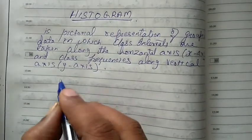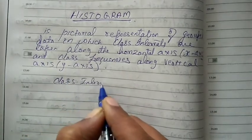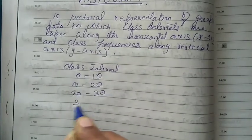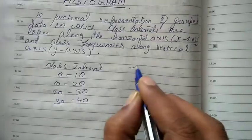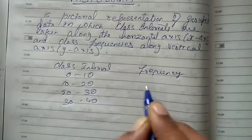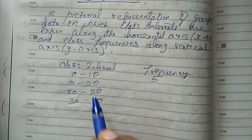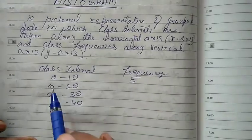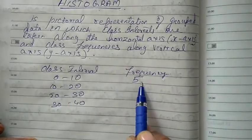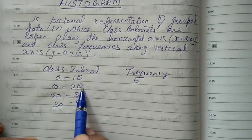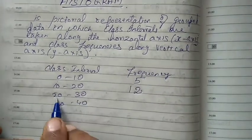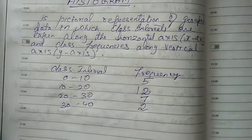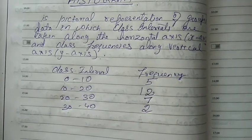Now when we say class interval, it is given like 0 to 10, 10 to 20, 20 to 30, 30 to 40. And frequency — suppose in our test for 40 marks, the students who got between 0 to 10: 5 students; 10 to 20: 12 students; 20 to 30: 7 students; 30 to 40: 2 students. So we have this class interval and frequency.